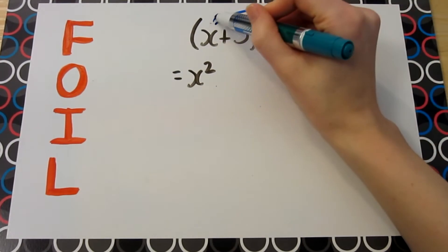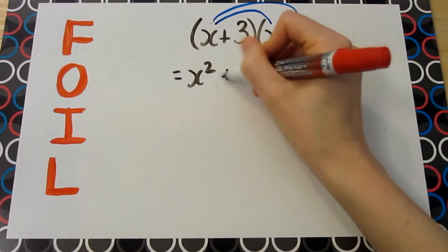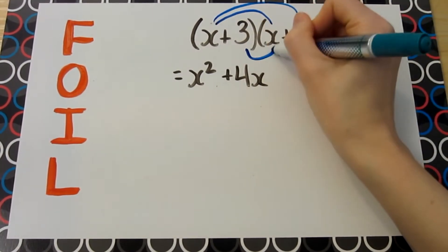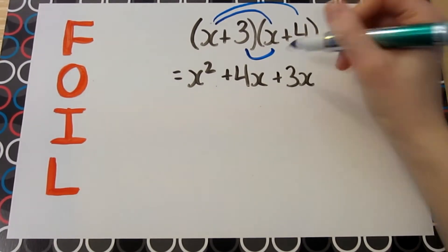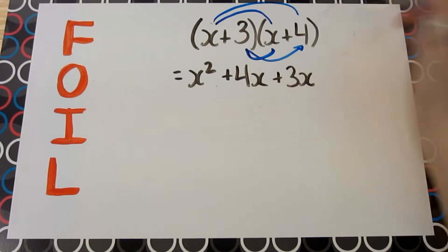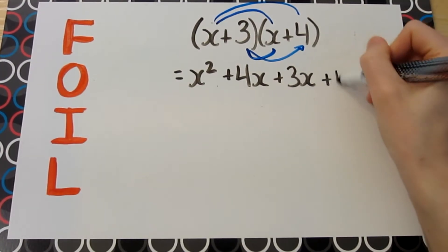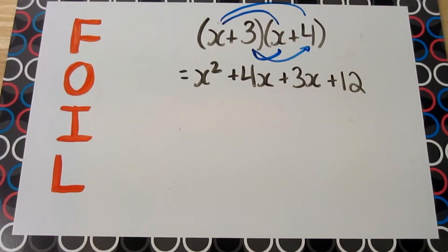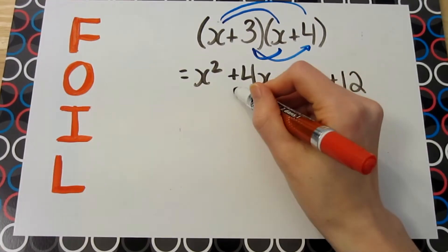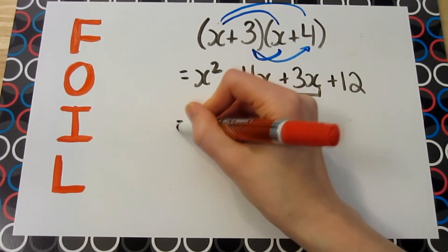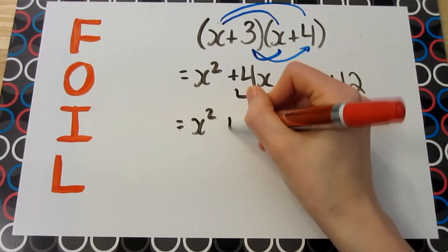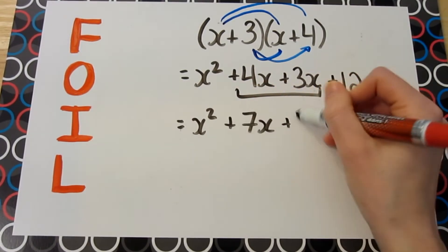Next, the outside terms: x times 4 equals 4x. Next, the inside terms: 3 times x gives you 3x. And lastly, the last two terms, which is 3 times 4, which gives us 12. Now that we've expanded, we want to simplify by collecting like terms. The only like terms here are the 4x and 3x, giving us x squared, and 4x plus 3x added together gives us 7x plus 12.